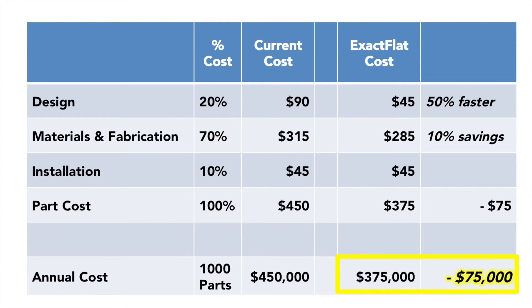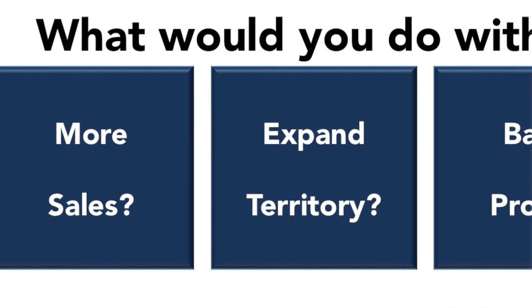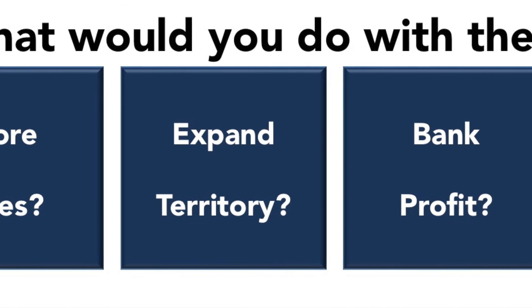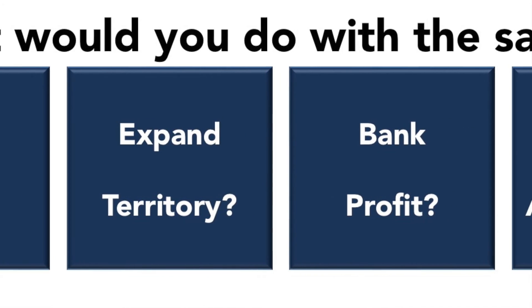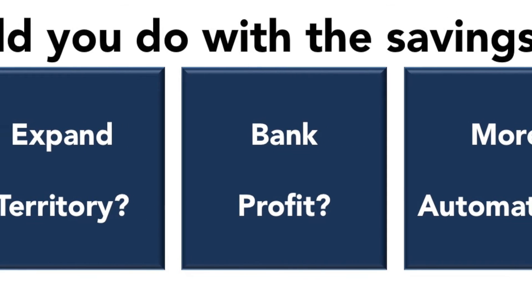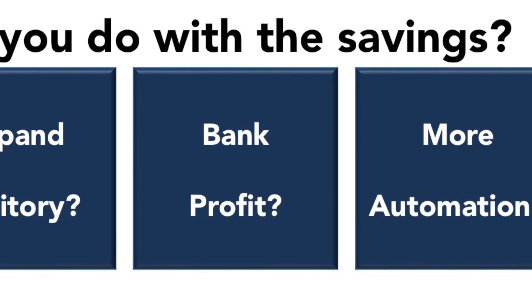If your company could save $75,000 per year, what would you do with the savings? Invest more in sales? Expand territory? Bank the profit? Invest in automation?